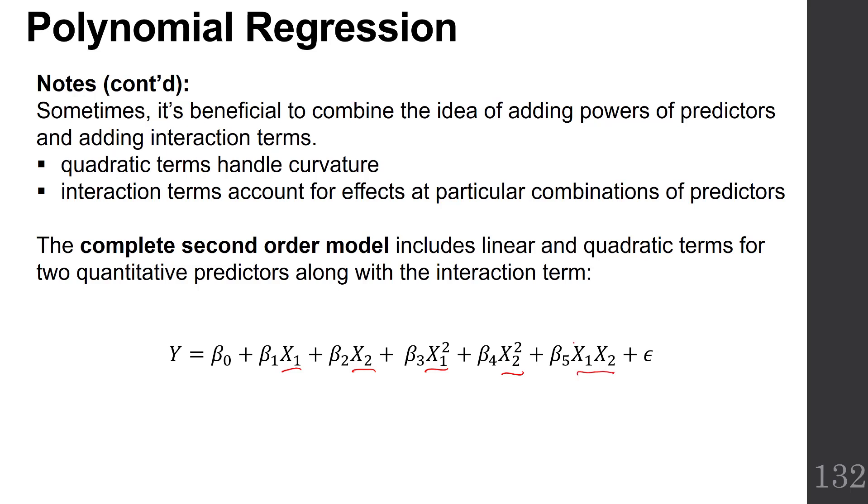We have the usual coefficients on these five terms: the β₀ intercept and then our β₁ through β₅ coefficients on our predictors. That is called the complete second-order model. As with any other multiple regression model, make sure to guard against overfitting.